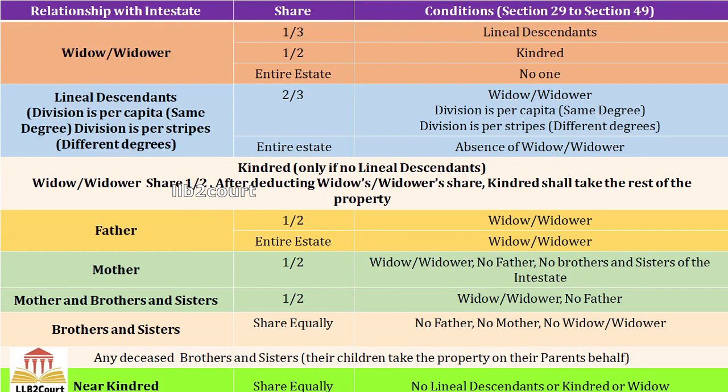The next one is lineal descendants. If they are surviving in the same degree then the division is per capita, and in different degrees the division is per stirpes. Their share would be 2/3 if widow or widower is alive. If no widow or widower is present, then the entire estate will be shared by the lineal descendants themselves.